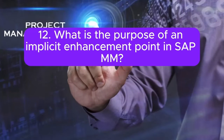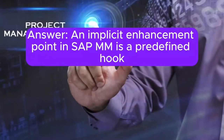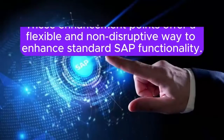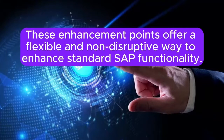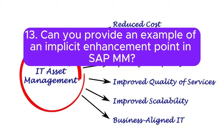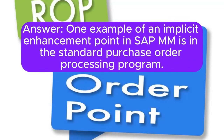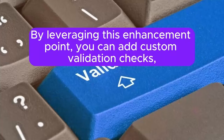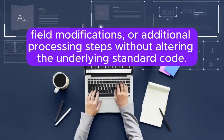What is the purpose of an implicit enhancement point in SAP MM? An implicit enhancement point in SAP MM is a predefined hook provided by SAP that allows custom logic to be inserted at specific locations in standard programs without modifying the original code. These enhancement points offer a flexible and non-disruptive way to enhance standard SAP functionality. For example, in the standard purchase order processing program, you can add custom validation checks, field modifications, or additional processing steps.